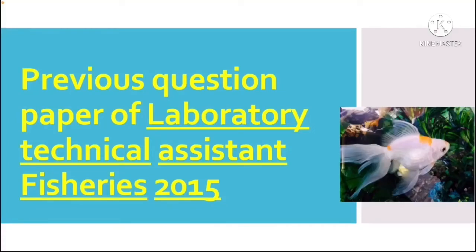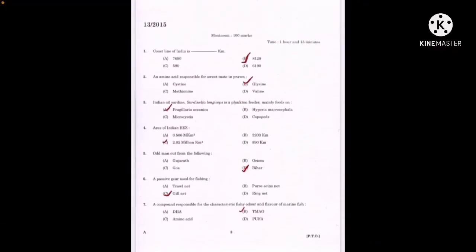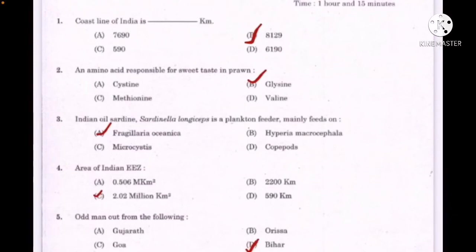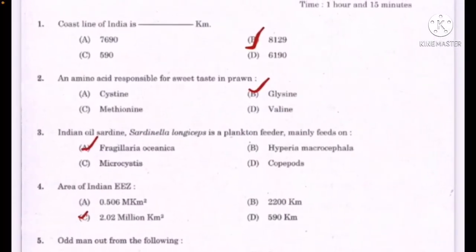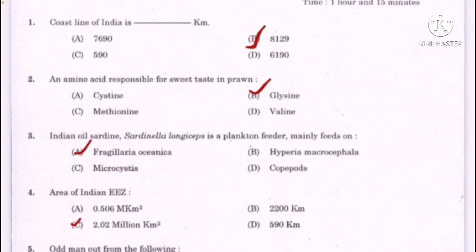Good evening everyone. Laboratory technical assistant fisheries previous question paper is now in discussion. First question: the coastline of India is dash kilometers. The amino acid responsible for sweet taste in prawn — correct answer option B: glycine. Indian oil sardine Sardinella longiceps is a plankton feeder.